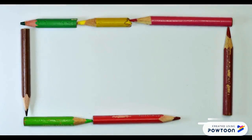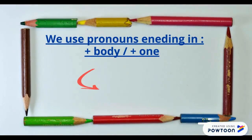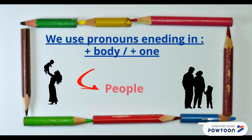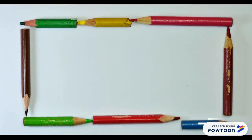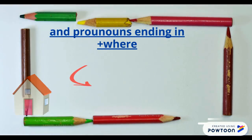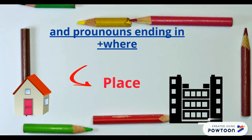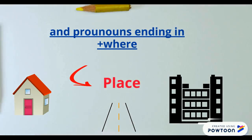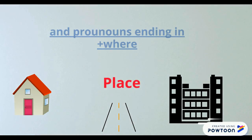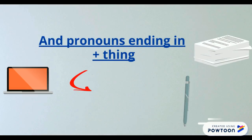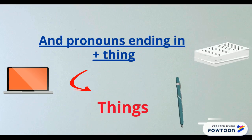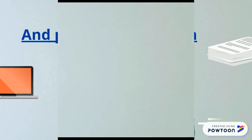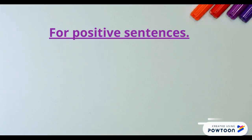For pronouns ending in -one or -body, like anyone or anybody, we use them to talk about people. Pronouns ending in -where are used when talking about a place, and pronouns ending in -thing are used when talking about things.